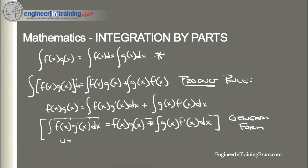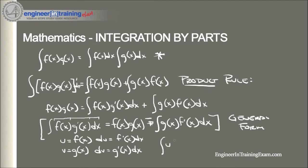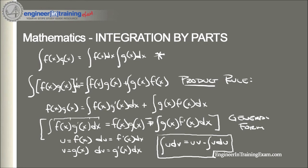We take u and define u as f(x), and v as g(x). Taking derivatives, we get du equal to f'(x) dx, and dv equal to g'(x) dx. By substitution, this general formula can be rewritten as: the integral of u dv equals uv minus the integral of v du. We want to determine how we can substitute our given product to get it in the form u dv.